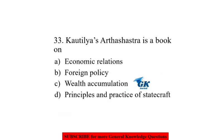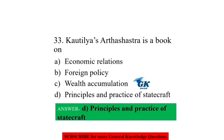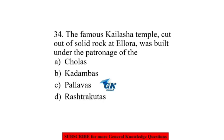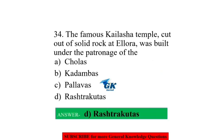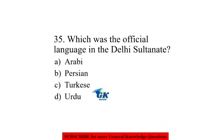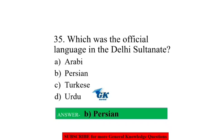Kautilya's Arthashastra is a book on the principles and practice of statecraft. The famous Kailasa temple cut out of solid rock at Ellora was built under the patronage of the Rashtrakutas. What was the official language in the Delhi Sultanate? Persian.